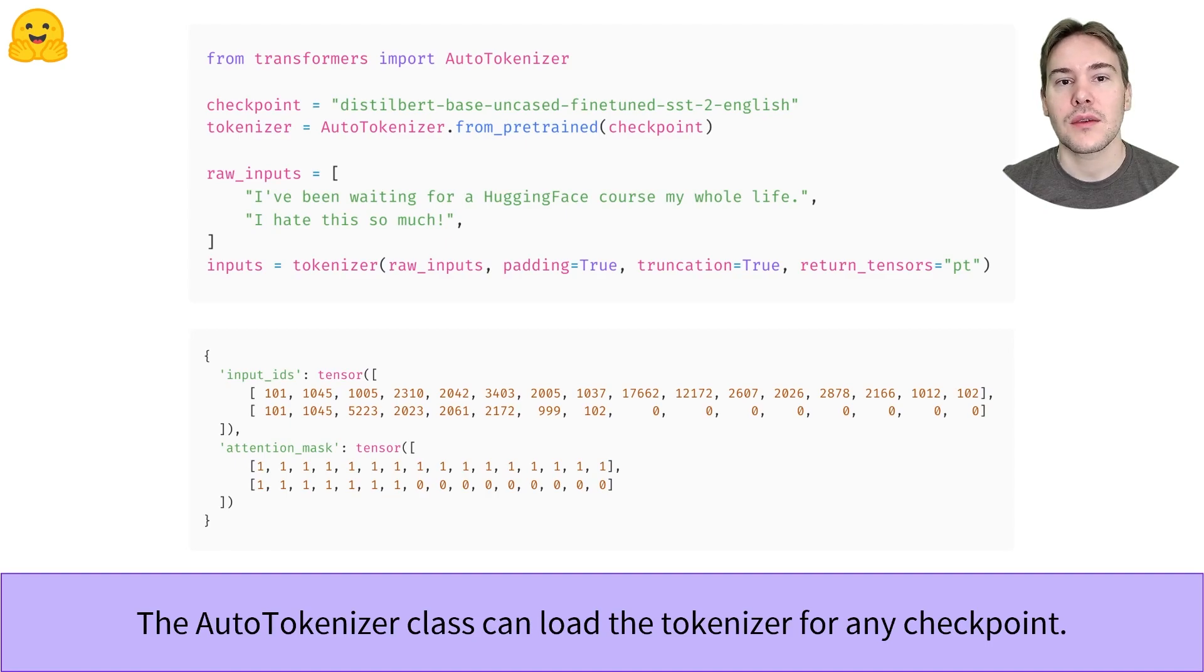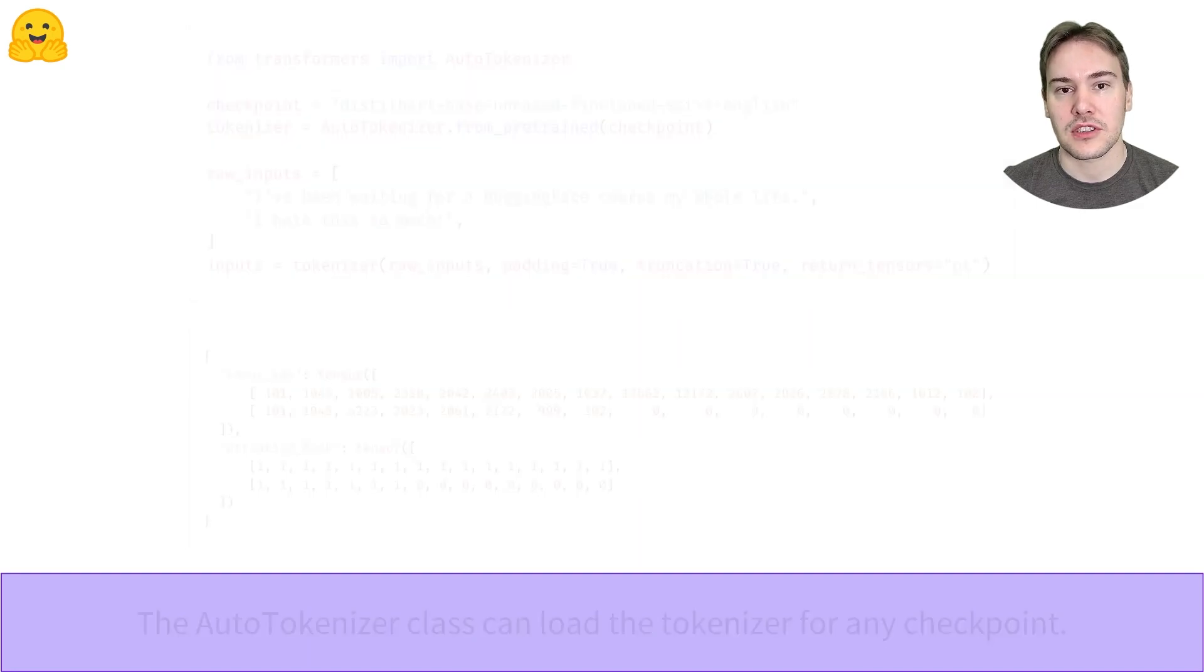Looking at the result, we see we have a dictionary with two keys. Input IDs contains the IDs of both sentences with zeros where the padding is applied. The second key, attention mask, indicates where padding has been applied so the model does not pay attention to it. This is all what is inside the tokenization step.